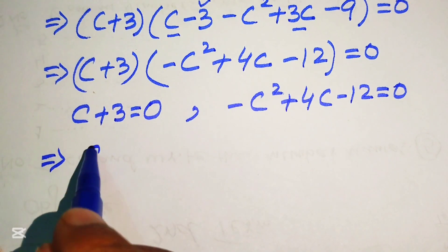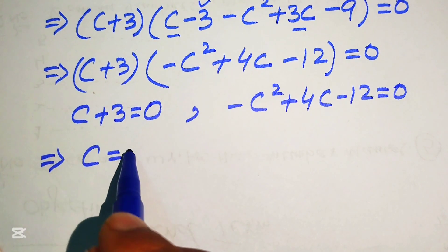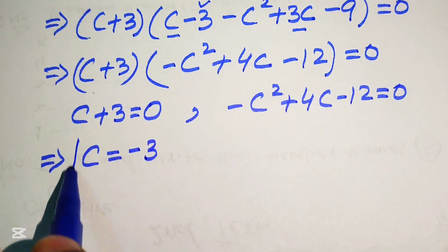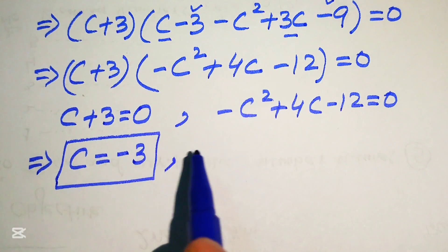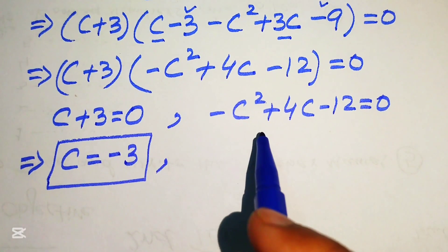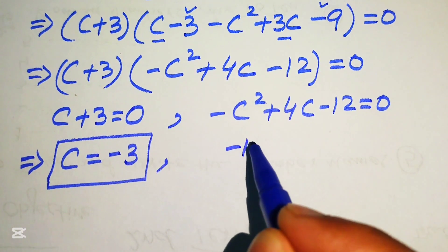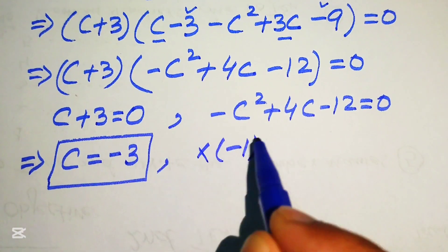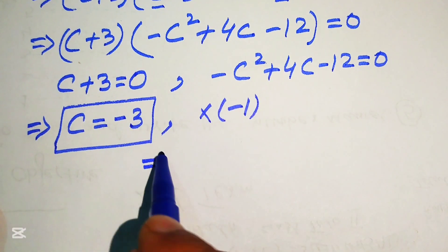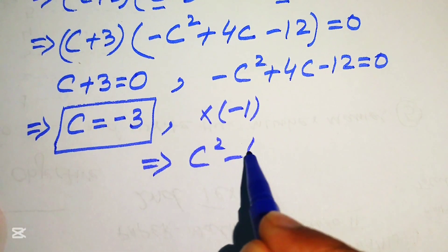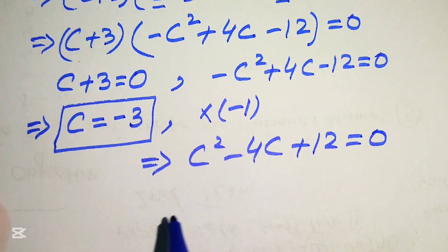For Case 1, moving plus 3 to the right-hand side gives c equals minus 3. For Case 2, we multiply each term by minus 1, which transforms the equation to c squared minus 4c plus 12 equals 0.